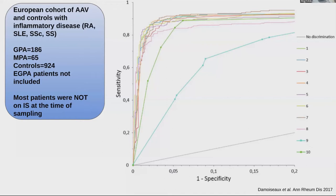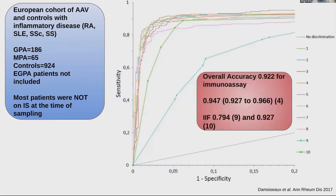IF still has some advantages, like detecting atypical ANCA patterns, but the only two common antigens we test are MPO and PR3, and we don't usually test for atypical antigens outside of research. In this study, the overall accuracy for immunoassay was 0.922, and the UW method (number four) had accuracy of 0.947. About 11 to 17% were ANCA negative by IF and 9 to 16% were negative by immunoassay.